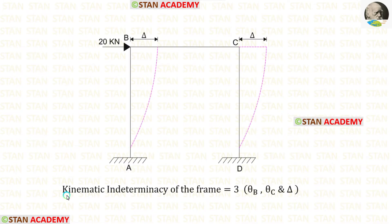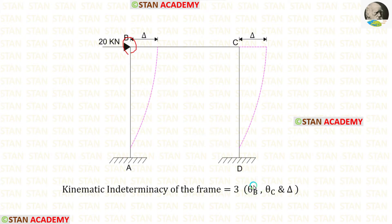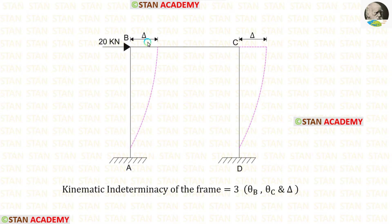Now let us find the kinematic indeterminacy of the frame. In joint B there will be slope θB, and in joint C there will be slope θC. We know that this frame is subjected to sway towards the right side. So the total kinematic indeterminacy is equal to 3: slope θB, slope θC, and the sway delta.